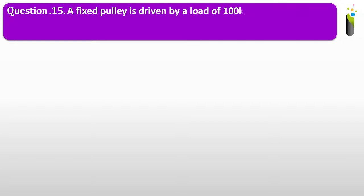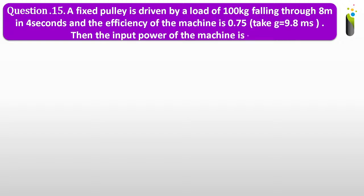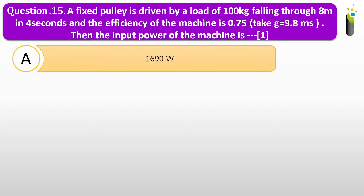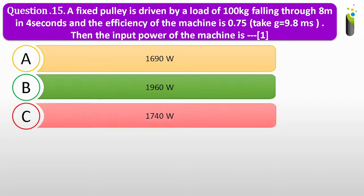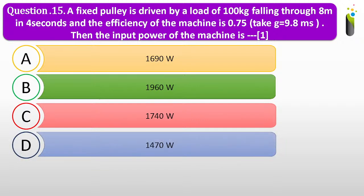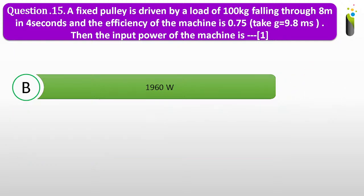Question number fifteen. A fixed pulley is driven by a load of 100 kg falling through 8 meters in 4 seconds and the efficiency of the machine is 0.75. Take g = 9.8 m/s². The input power of the machine is dash. Options: A, 1690 watts; B, 1960 watts; C, 1740 watts; D, 1470 watts. The correct answer is 1960 watts.